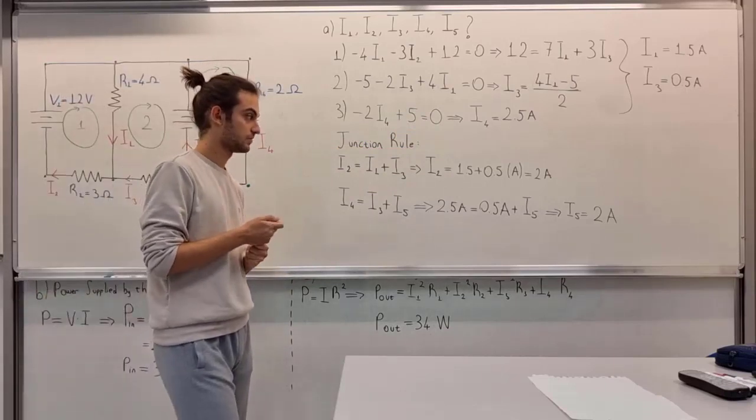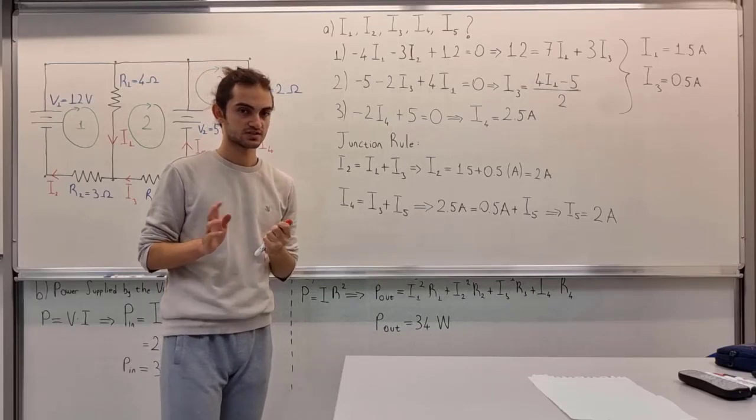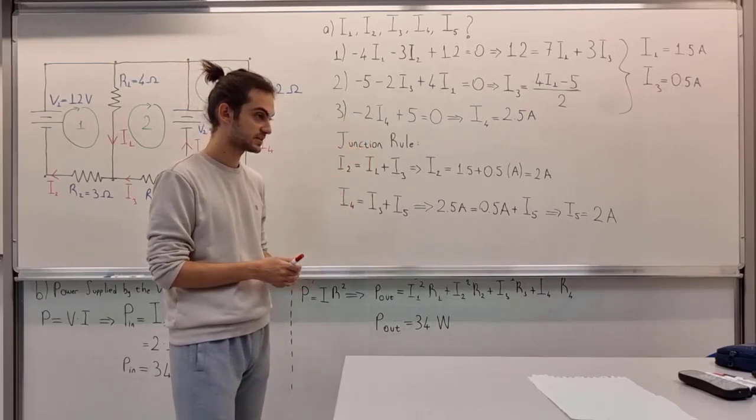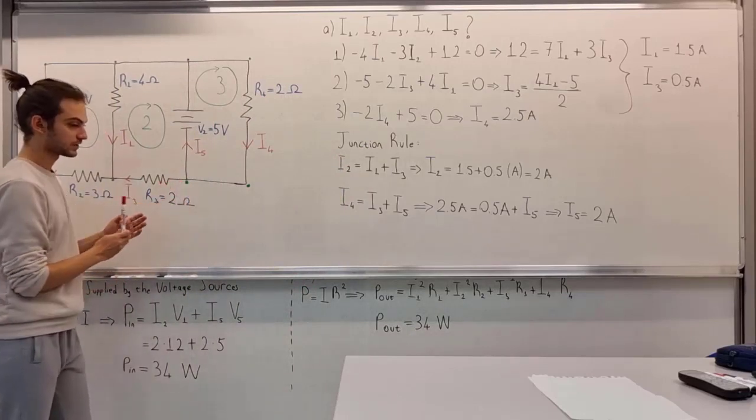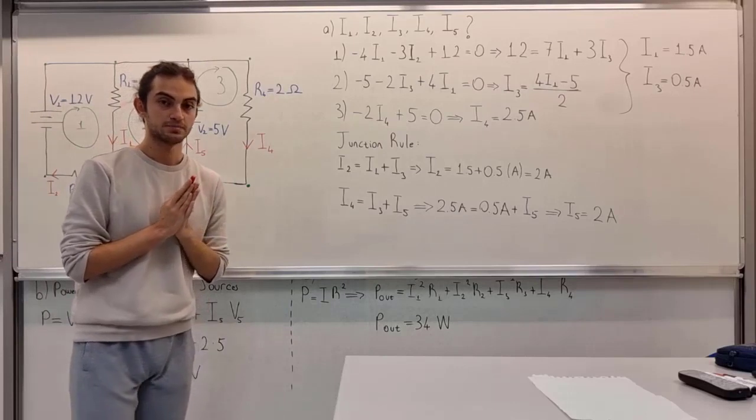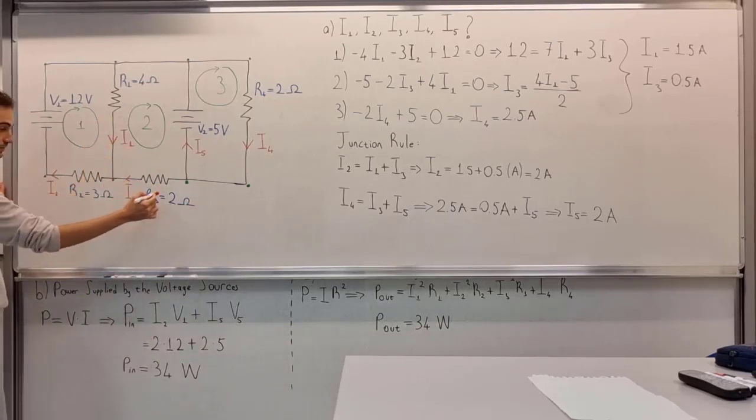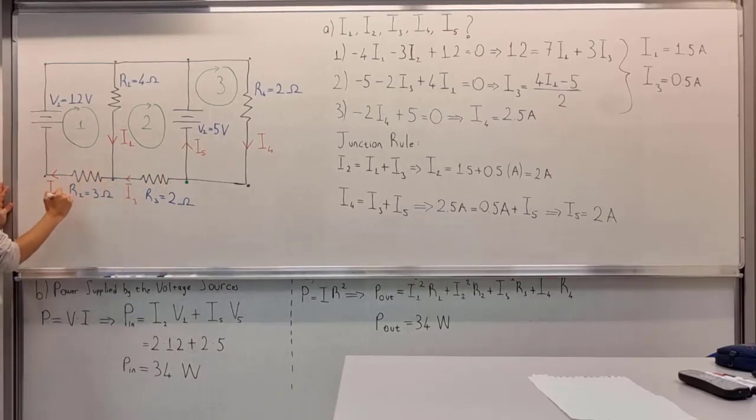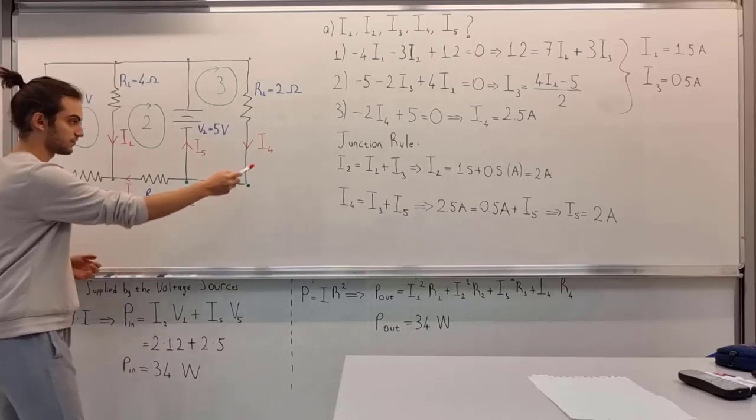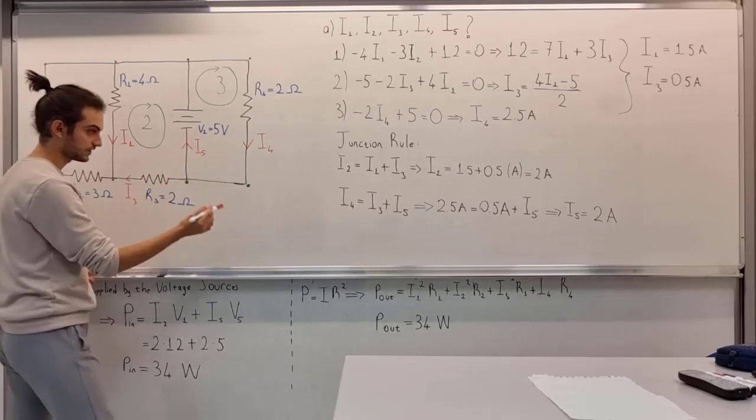What else should we do before trying to calculate these currents? Remember the junction rule and the loop equations. Junction rule states that when one current is going into separate ways, the sum of the separate ways has to be equal to the main path. We have I1 coming from this path, I3 coming from this path, and I2 coming from this path. So we can write I2 equal to I1 plus I3. I4 comes from here and then goes into two separate paths, so I5 plus I3 has to be equal to I4.